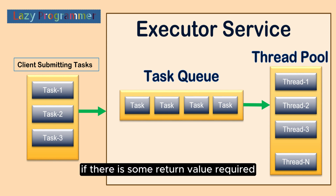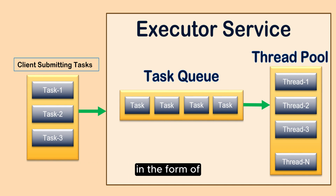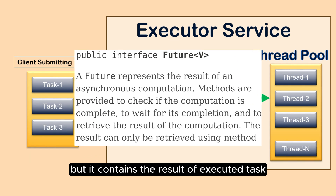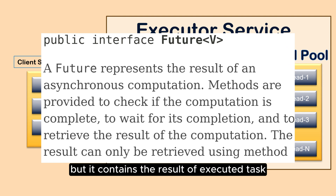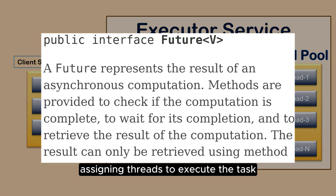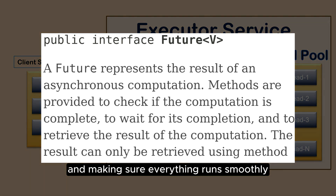Once the task is complete, if there is some return value required, then the executor framework will make sure it reaches back to the calling client in the form of a Future object. A Future object contains the result of the executed task. The executor framework helps in organizing tasks, assigning threads to execute the task, and making sure everything runs smoothly.